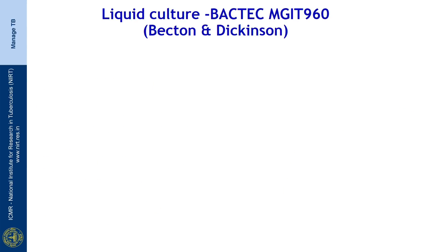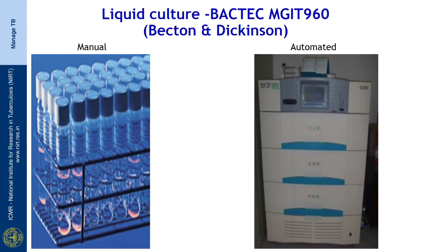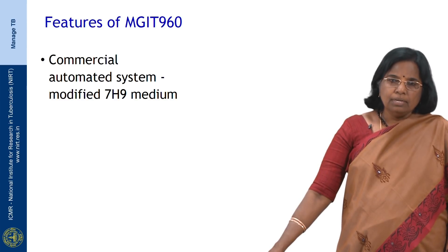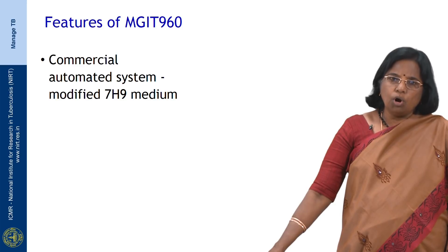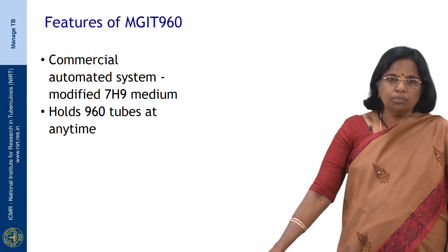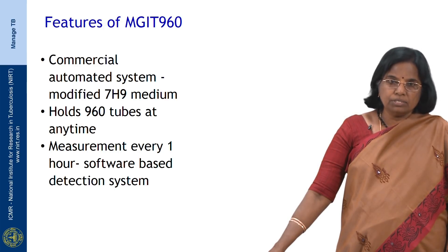Next we come to the liquid culture-based commercial system. The most widely used is the BACTEC MGIT 960 from Becton Dickinson. Two versions are available: a manual version and the automated MGIT 960 system. Features of the MGIT 960 include that it is a fully automated system using modified 7H9 medium, holds about 960 tubes at any time point, measurement of every tube is done every hour, and a software-based detection system is available. This system is useful for all samples except blood and urine.